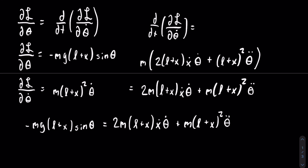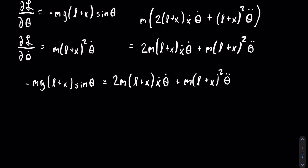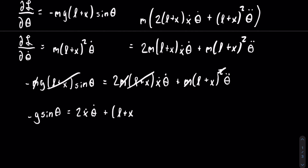Both sides of the equation can then be divided by m and l plus x, so there will be some canceling. After the cleanup, all that we are left with is: negative g times sine of theta is equal to 2 x dot theta dot plus the quantity l plus x, times theta double dot.